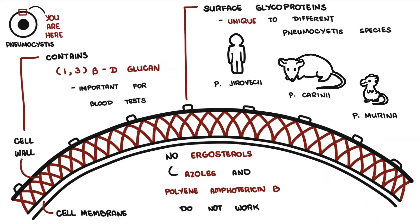Back in the day, Pneumocystis carinii was thought to be the one that infected humans, but that's not the case. So PCP is actually an abbreviation for Pneumocystis pneumonia and not Pneumocystis carinii pneumonia.